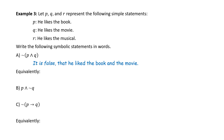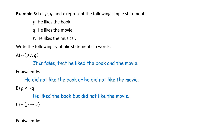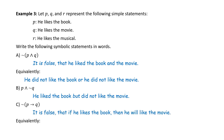Equivalently, we might say he did not like both the book and the movie. Part B: P ∧ ∼Q — 'He liked the book but did not like the movie.' Part C: ∼(P → Q) — 'It is false that if he liked the book, then he will like the movie.' Equivalently, 'he likes the book but did not like the movie.'